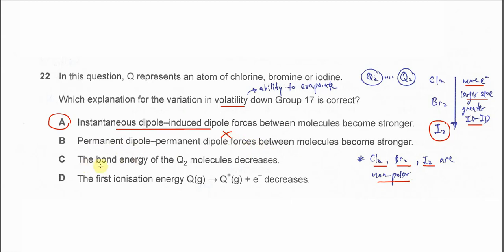C is about bond energy in these Q2 molecules, meaning chlorine, bromine, iodine molecules.